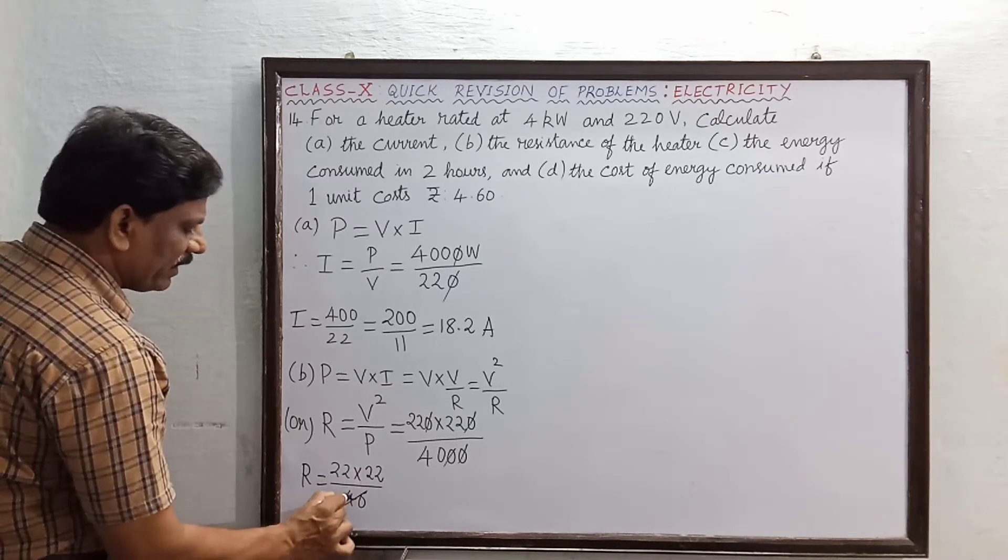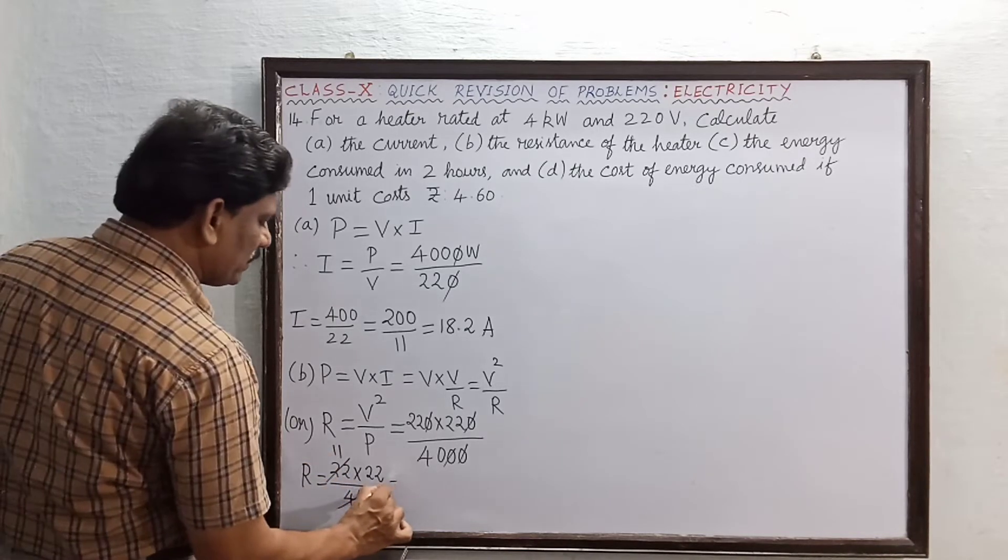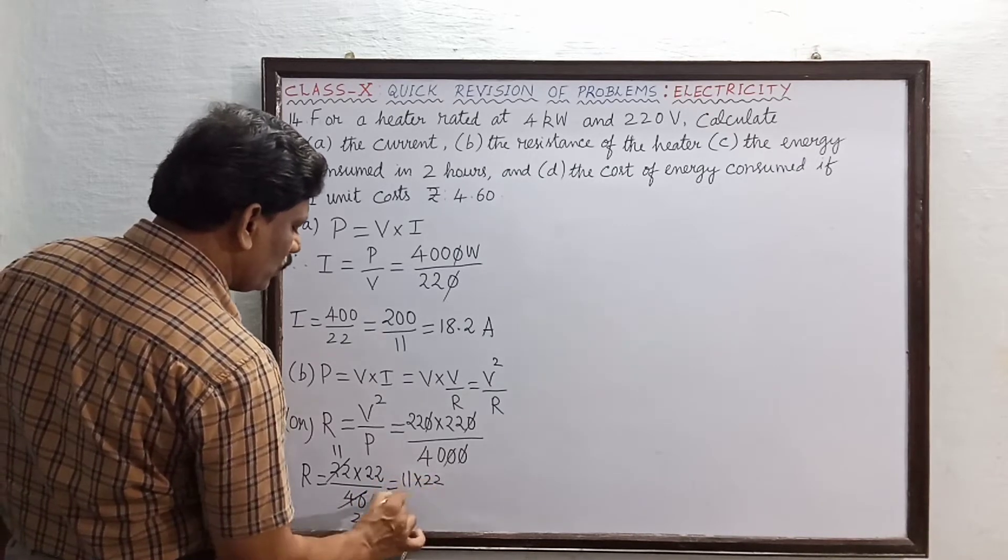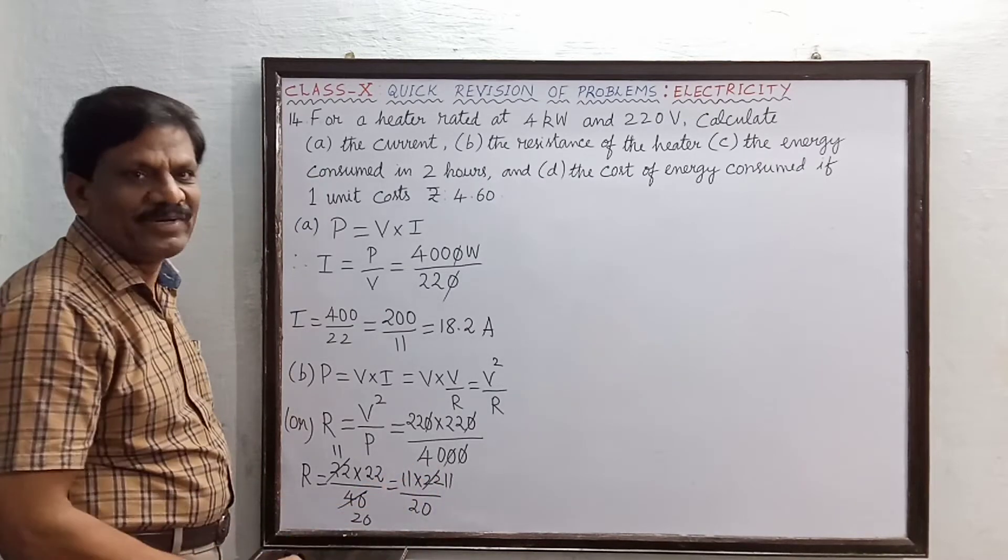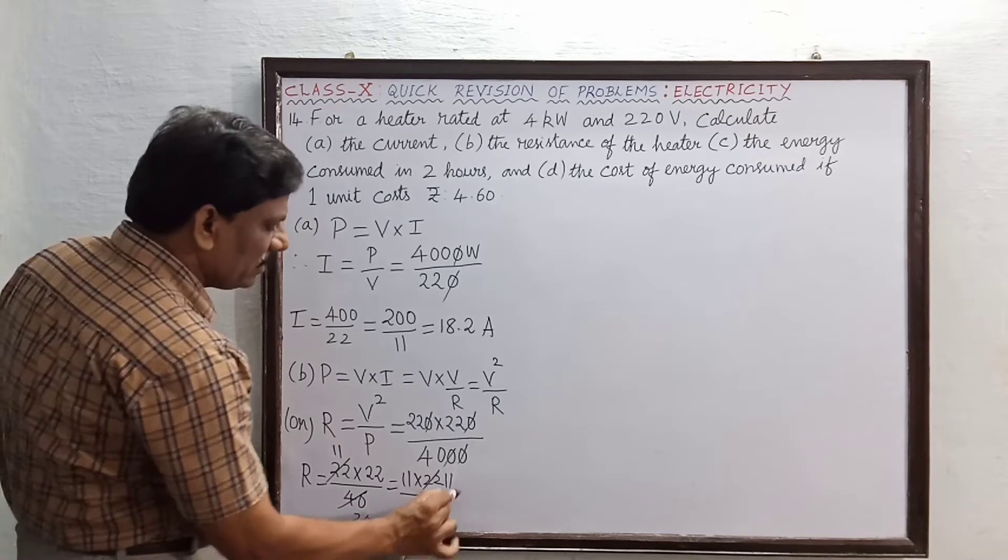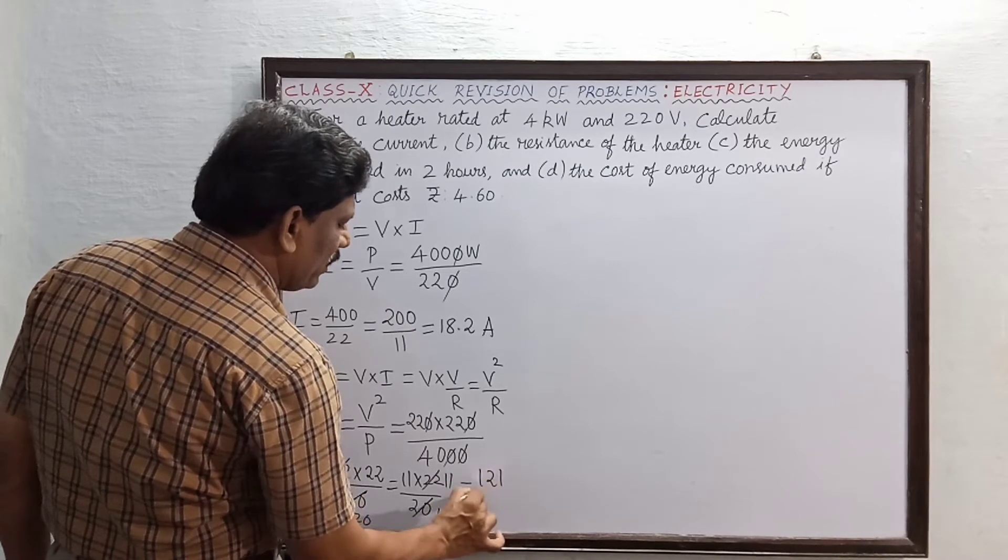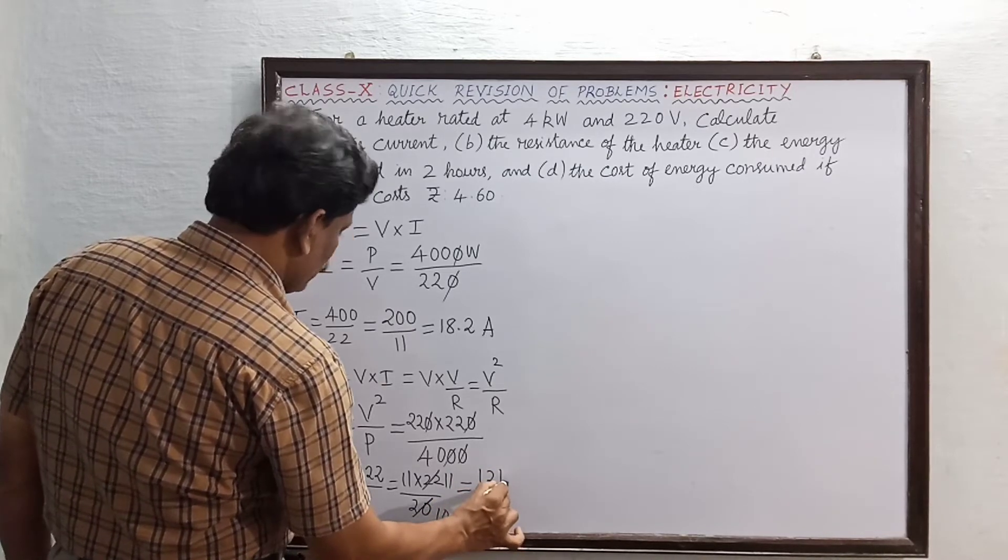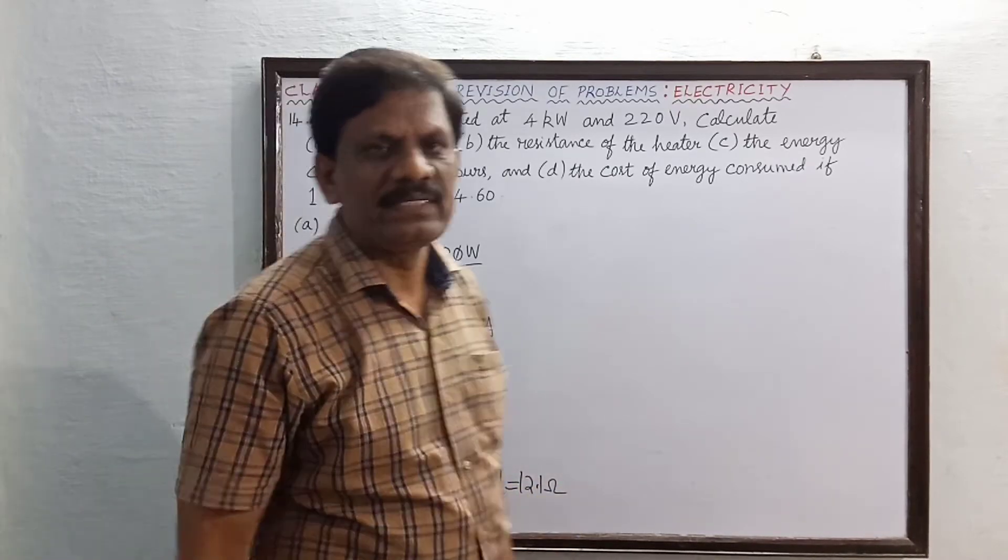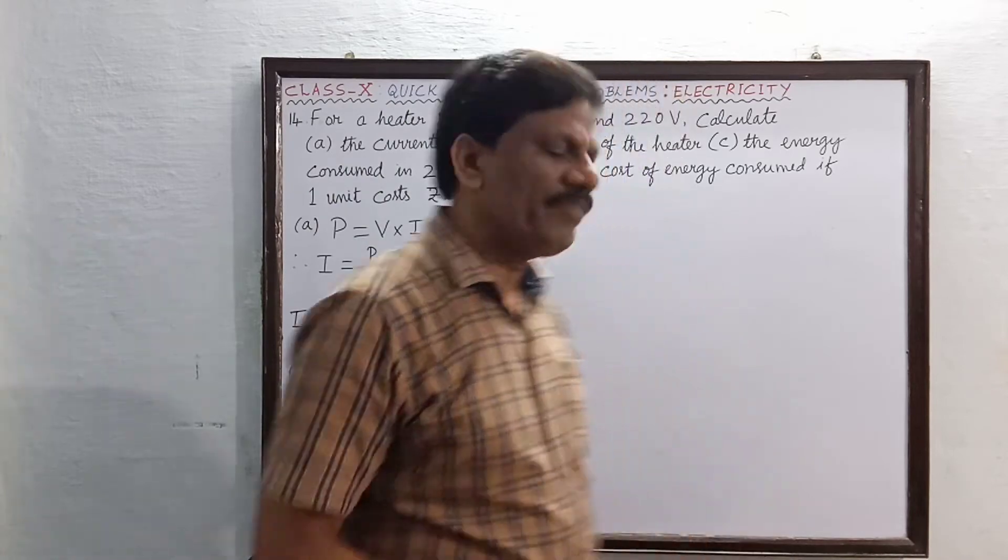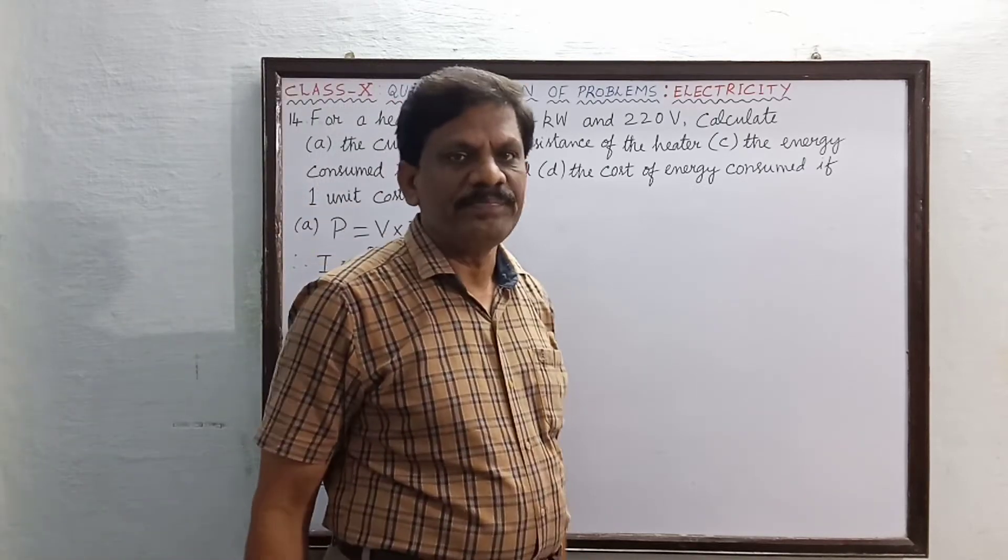Resistance R is now equal to 22 into 22 divided by 40. This is again divisible by 2. 22 becomes 11, so this is equal to 11 into 22 divided by 20. Once again, this 11 into 22 and this is 10. This is 11 into 11 by 10. 11 into 11 is 121 divided by 10. What is this equal to? 12.1 Ohm. Step by step you do the calculation and you will find that the resistance of the heater is equal to 12.1 Ohm.